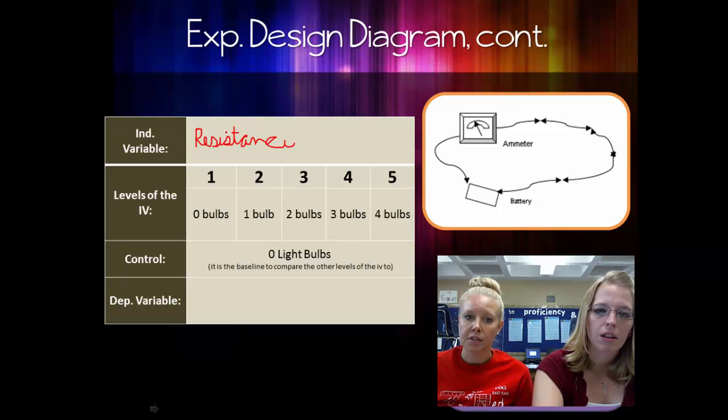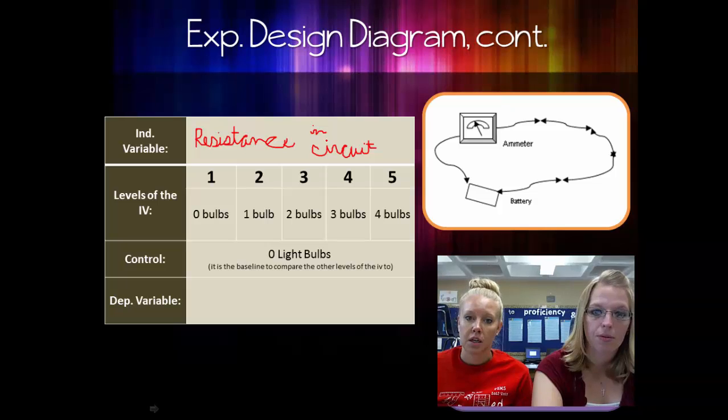The independent variable is the resistance in the circuit. And your levels of your IV are already entered there for you. So you're changing by adding more bulbs, that's what's changing your resistance. Remember, we talked about how bulbs, motors, fans, all those are called resistors.